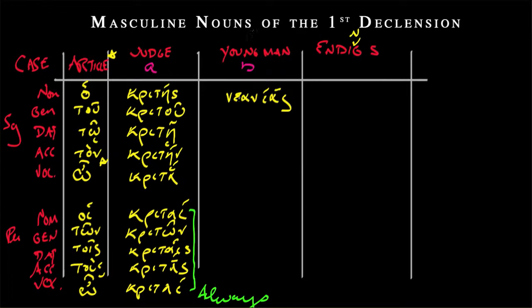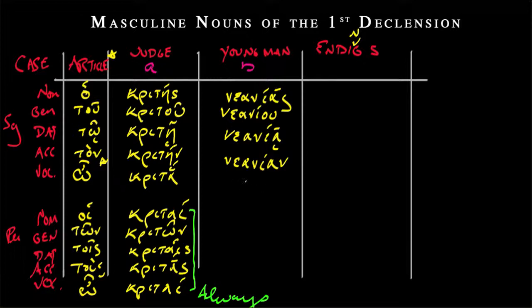All right, but here we have neanias, and now in the genitive singular, we're going to, again, get this kind of more masculine-looking ending. Neaniu. Neaniu. So, again, just like tu kritu. But as we move through, we're going to see we had etas over here, but we're going to have long alphas on this side. So, neaniya, iota subscript, long alpha accent still on the iota. And then for the accusative, ton neaniyan, long alpha. And then in the vocative, we're going to, again, lose the sigma. So we have neaniya. Neaniya. Good.